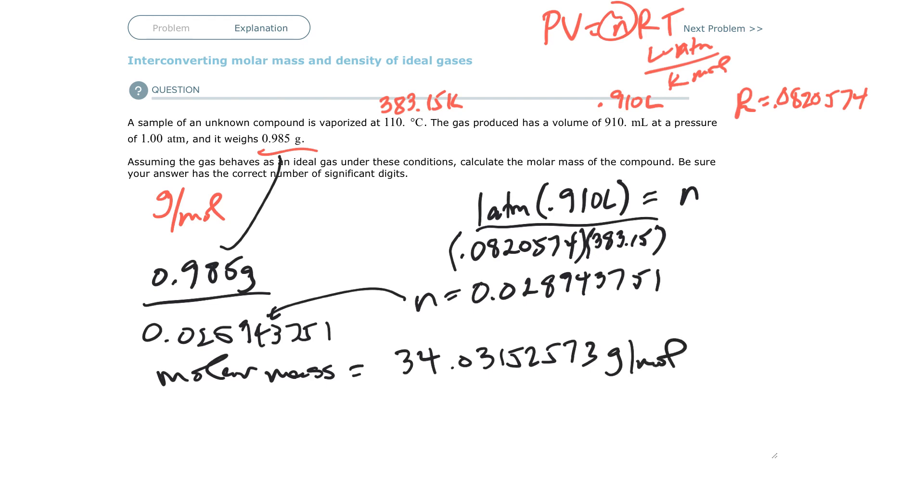Now look for significant figures. I've got 110 dot, so that's three. 910 dot, that's three. 1.00 dot, that's three. 0.985, that's three. So I need three significant figures, so it's going to be 34.0 grams per mole.